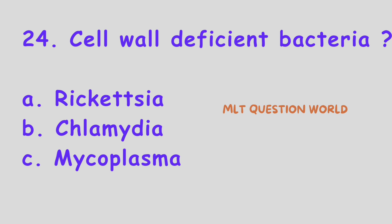Question number 24. Cell wall deficient bacteria. Which of the following is a cell wall deficient bacterium? Option A, Rickettsia; Option B, Chlamydia; Option C, Mycoplasma. The right answer is Option C, Mycoplasma. Cell wall deficient bacteria is Mycoplasma.